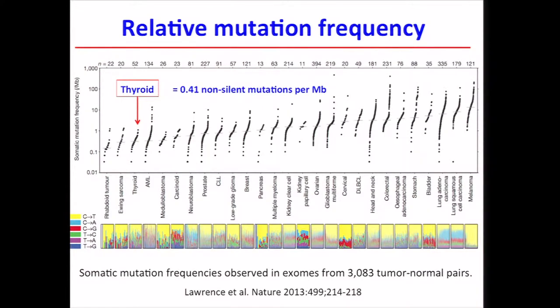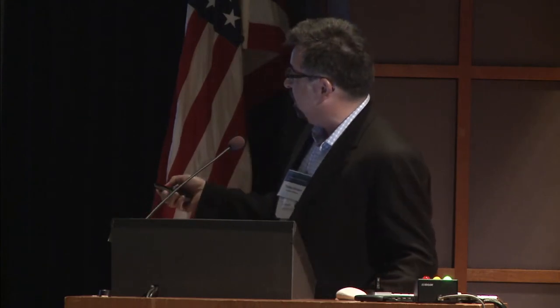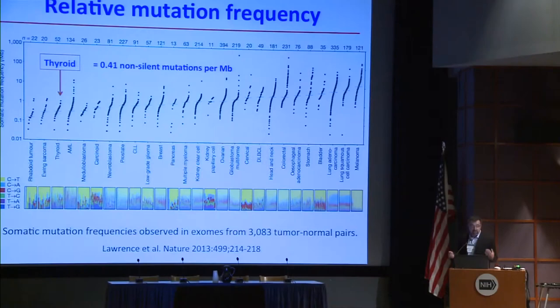I really like this slide — it explains a lot. It shows that among all tumor types, papillary thyroid carcinoma has relatively low mutation density — actually the lowest if you restrict your view to solid tumors like carcinomas. The next lowest are prostate and breast. We think this is partly the reason why it's such an indolent carcinoma.